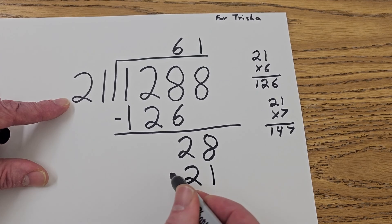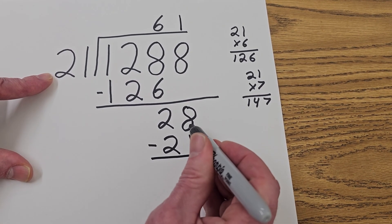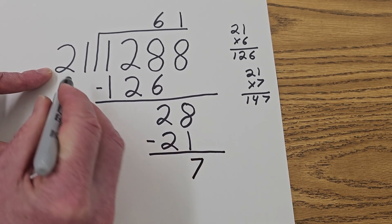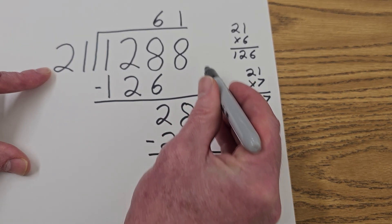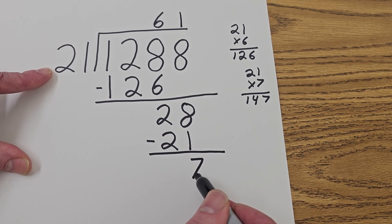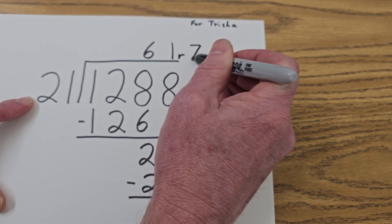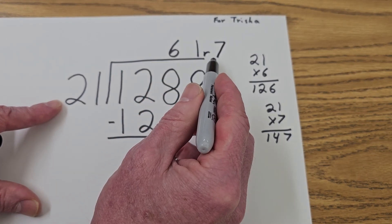And then our next step is subtraction. So I'm going to go ahead and put the line here. And then 8 minus 1 is 7. Can I put 21 into 7? No, you can't. Is there any other number to drop down? There's nothing. So then we have a remainder of 7. So I'm going to go ahead and put a little R right here and put 7. So our answer would be 61 remainder 7.